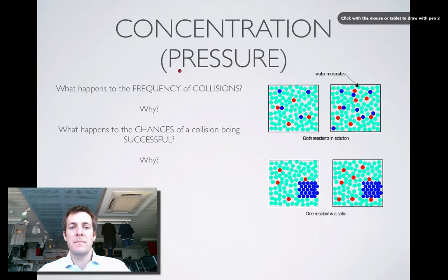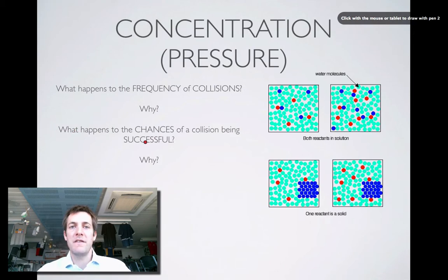Our routine involves two things: we're going to mention what happens to the frequency of collisions — does it go up or down and why in terms of collision theory — and we're going to say what happens to the chances of a collision being successful, that is having enough energy to get over the hill, or in other words to have the activation energy, and why.